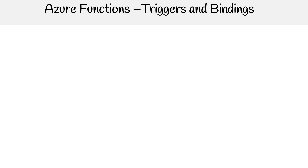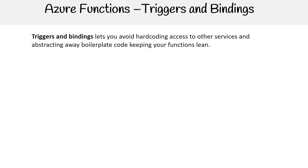Let's take a look at triggers and bindings for Azure Functions. We talked about them before, but let's give them a little bit more attention. Triggers and bindings let you avoid hard-coding access to other services, abstracting away boilerplate code and keeping your functions lean — the idea being that you won't have to add that code into your functions.